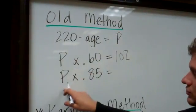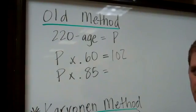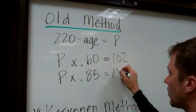Then you'll take that number P and you'll times it by .85 and that will give you the top number in your range. Again, in the case of a 50 year old person, this would be 145.